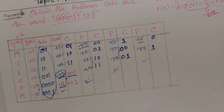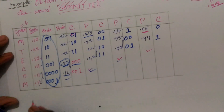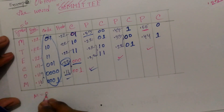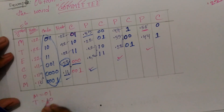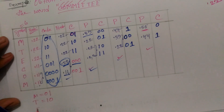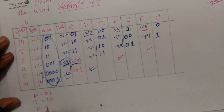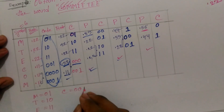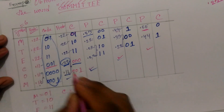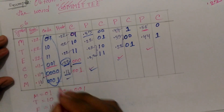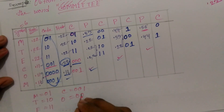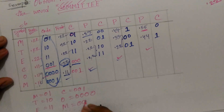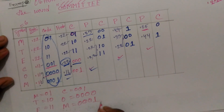Here we have code word: M code word is 0-1, T code word is 0-1, E code word is 1-1, C code word is 0-0-1, code word is 0-1, M code word is 0-0-1.